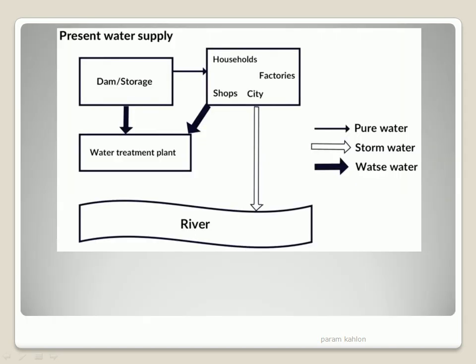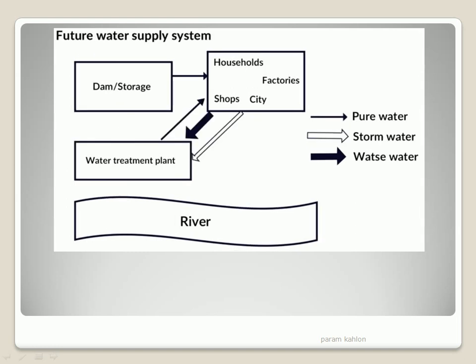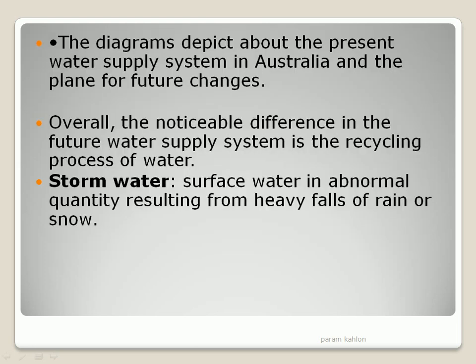Here we have a diagram — present — here we have a dam or city, which is a pure water supply. The diagram depicts the present water supply in Australia and a plan for future changes. Overall, the noticeable difference in the future water supply system is the recycling process of the water.